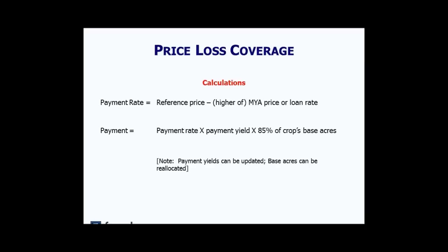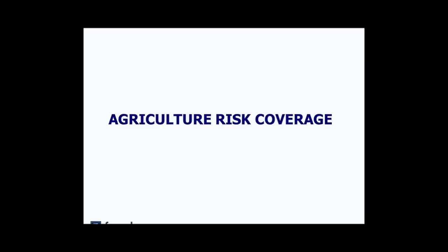The PLC payment rate is the difference between the reference price and the higher of the market year average price or the loan rate. Your payment is the payment rate multiplied by the payment yield multiplied by 85% of the crop's base acres. For example in McLean County, Illinois: assuming a 2014 market year average price of $3.55 with a reference price of $3.70, the payment rate is 15 cents. With an updated payment yield of 150 bushels per acre and 100 base acres, the payment would be $1,913.